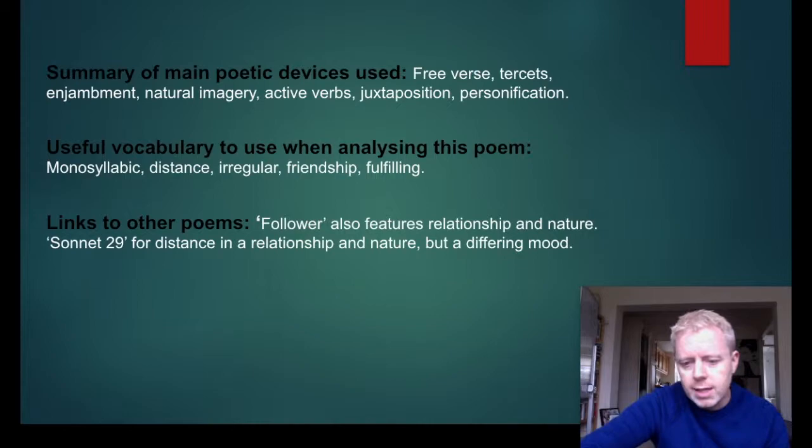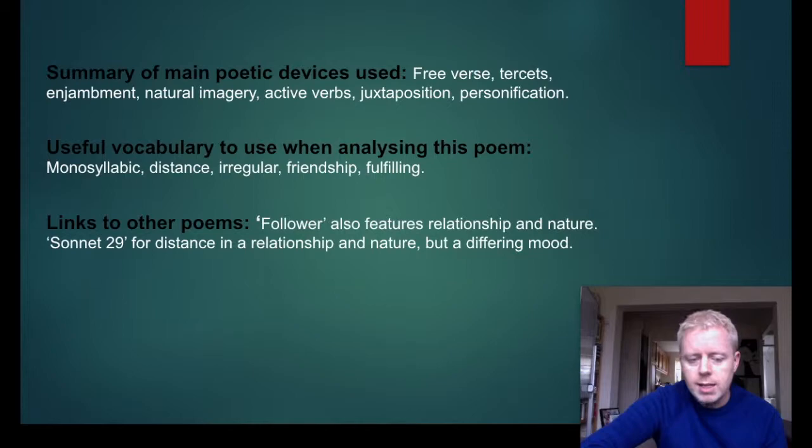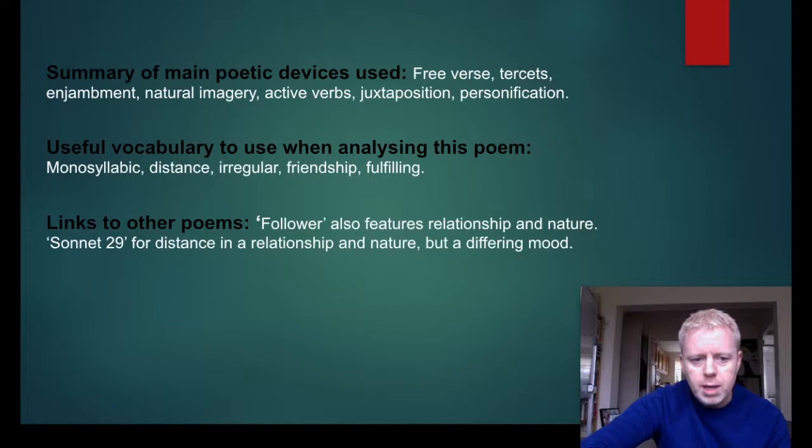When comparing poems, think conceptually rather than just structurally — not simply because they're both sonnets or share a stanza form. Compare the main ideas behind them. 'Follower' also features relationship, nature, and distance, and 'Sonnet 29' is relevant but in a very different mood. In 'Sonnet 29' it's very much a physical romantic relationship — she's yearning for her husband or lover to be with her physically, not just emotionally. Hopefully that's been useful. Do check in for all the other videos and good luck!